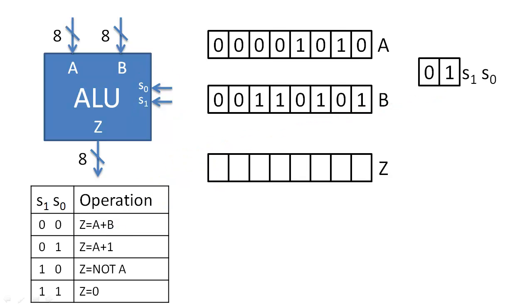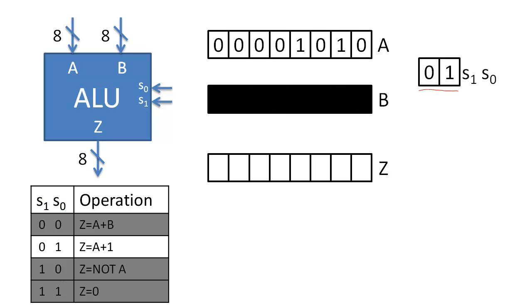If we change the control bits, we will change which operation is performed. Because this operation does not need an input from B, the B inputs will be ignored. The ALU will send an increment value of A back to the register file.